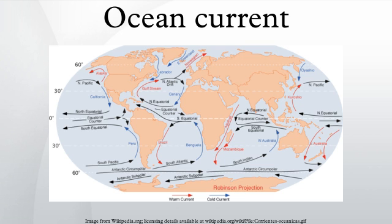Knowledge of surface ocean currents is essential in reducing the costs of shipping, since traveling with them reduces fuel costs. In the sail ship era knowledge was even more essential. A good example is the Agulhas Current, which long prevented Portuguese sailors from reaching India. Even today, round-the-world sailing competitors employ surface currents to their benefit. Ocean currents are also very important in the dispersal of many life forms — an example is the life cycle of the European eel.